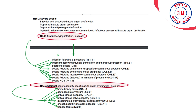Coding of etiology and manifestations has two important guidelines to review and must be followed for accurate assignment and reporting of codes. These instructional guidelines can be seen in the tabular list at the code category or subcategory levels.